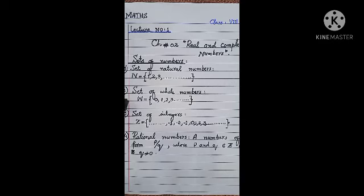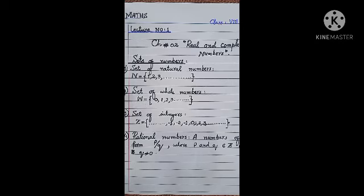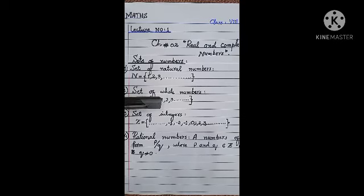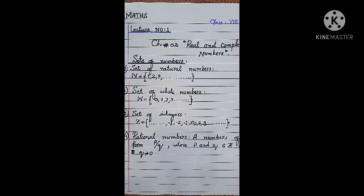The second set is the set of whole numbers, denoted by W, and it starts from zero. The elements of the set of whole numbers are 0, 1, 2, 3, and so on.